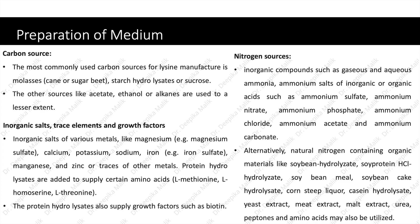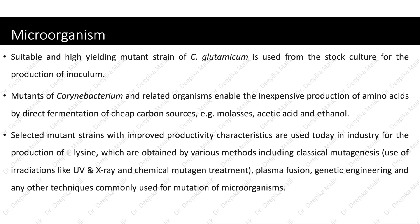After the media is ready, a suitable and high-yielding mutant strain of Corynebacterium glutamicum is used as the stock culture for the production of inoculum. Mutants of Corynebacterium and related organisms enable inexpensive production of amino acids by direct fermentation of cheap carbon sources, e.g., molasses, acetic acid, and ethanol. Selected mutant strains with improved productivity characteristics are used in industry today, obtained by classical mutagenesis using radiations like UV and X-ray and chemical mutagen treatment, plasma fusion, genetic engineering, and other techniques commonly used for mutation of microorganisms.